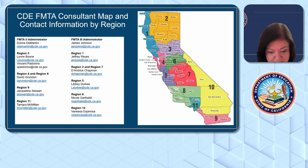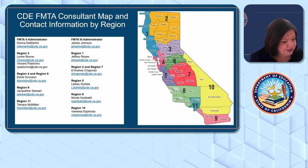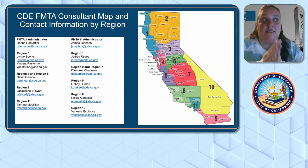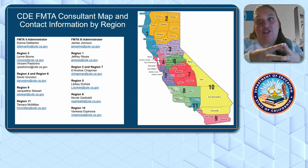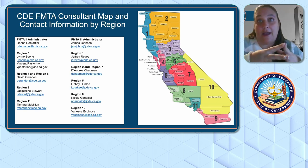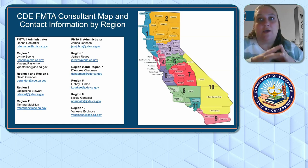For charter LEAs with authorizing districts in multiple counties: your regional consultant is based on your SELPA and the location of your SELPA. A lot of charters are with El Dorado County Charter, which is in Region 3. If you're part of a charter authorized by a local LEA — for example, in Woodland, a charter authorized by Woodland Joint Unified School District would put them in Yolo County SELPA. It's all about where your authorized charter SELPA location is. We also have a consultant dedicated to the charters in Region 3, specifically the El Dorado County Charter SELPA.